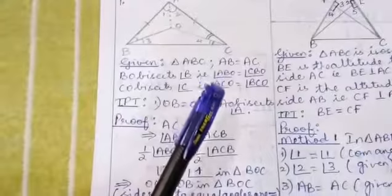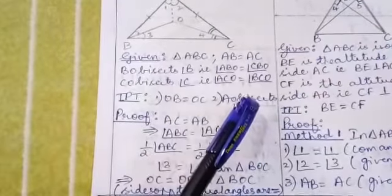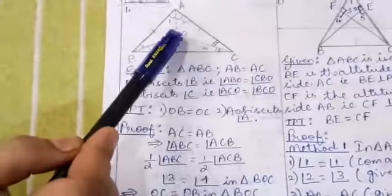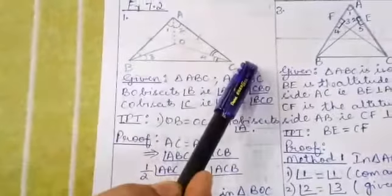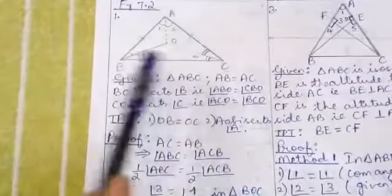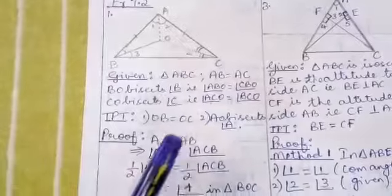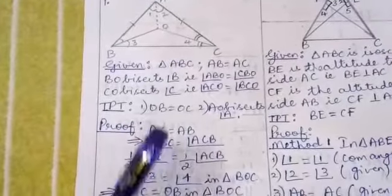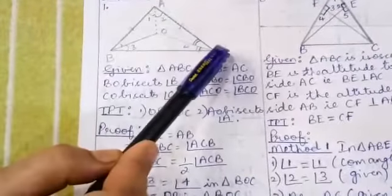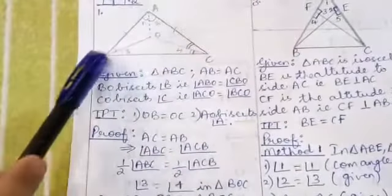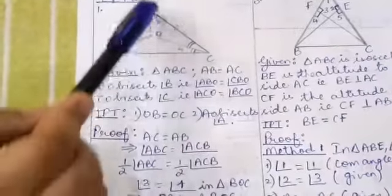In a triangle, when two sides are equal, the angles opposite to them are also equal. Look at triangle ABC without the line segments OA, OB, and OC. Which is the angle opposite to side AC? That is angle ABC.